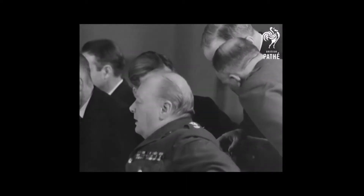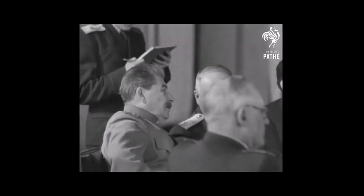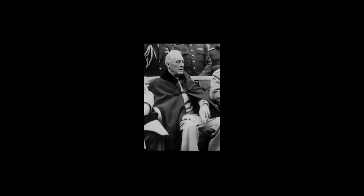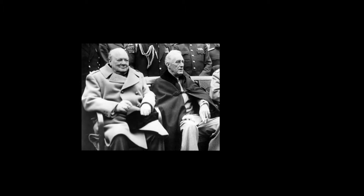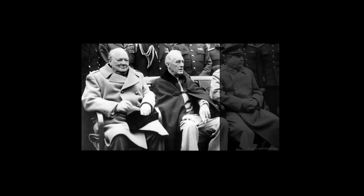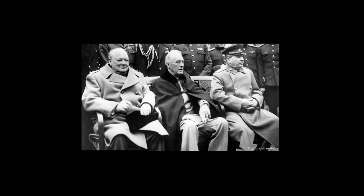By the time of the Yalta Conference, there was no longer a question regarding German defeat. Each of the three leaders had his own agenda for the meeting. American President Franklin Roosevelt wanted Soviet support in the Pacific War, specifically for the planned invasion of Japan. British Prime Minister Winston Churchill pressed for free elections and democratic governments in Eastern and Central Europe, while Soviet Premier Joseph Stalin demanded a Soviet sphere of political influence in Eastern and Central Europe as an essential aspect of the USSR's National Security Strategy.